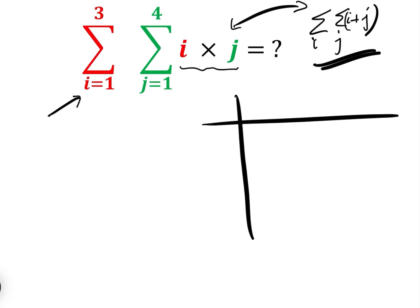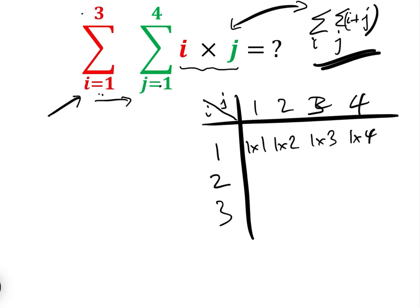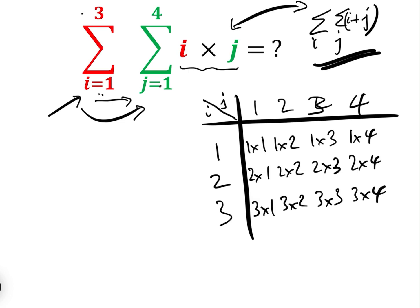We're going to use the same method as the previous video. We put i going 1, 2, 3 (since i is from 1 to 3) and j going from 1 to 4. When i equals 1: 1×1, 1×2, 1×3, 1×4. When i equals 2: 2×1, 2×2, 2×3, 2×4. When i equals 3: 3×1, 3×2, 3×3, 3×4. This grid is basically the answer to the double summation, and when we add up all these cells we get 60.